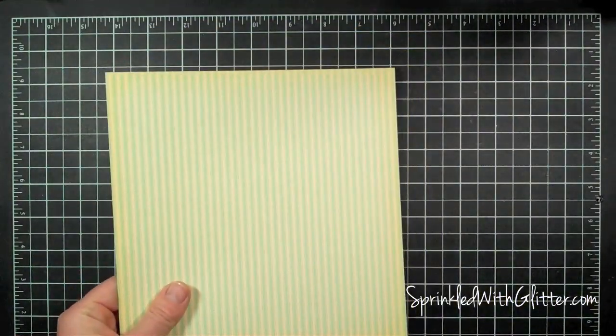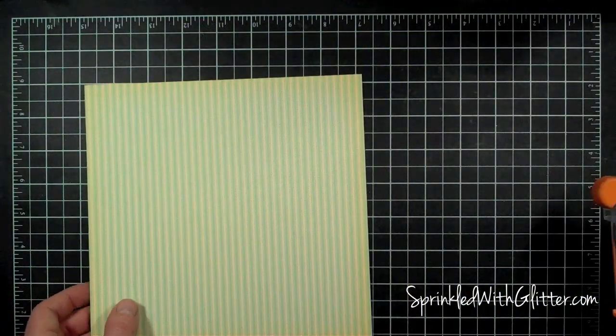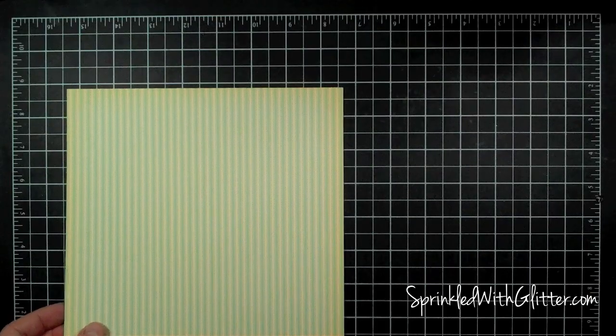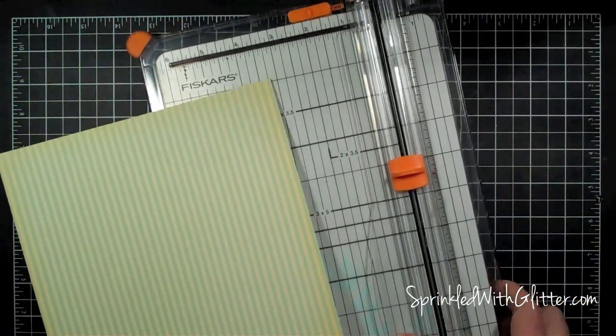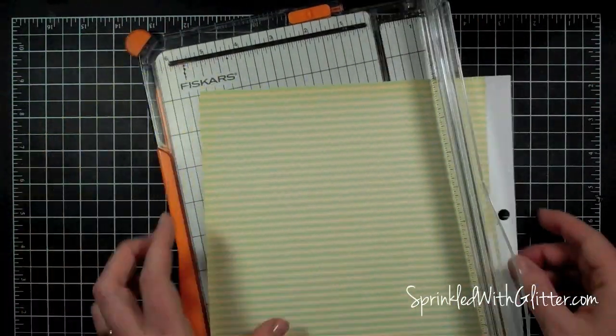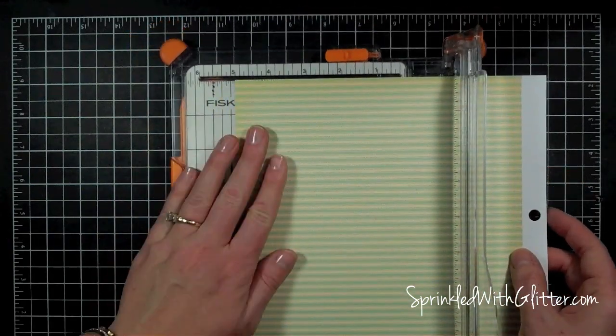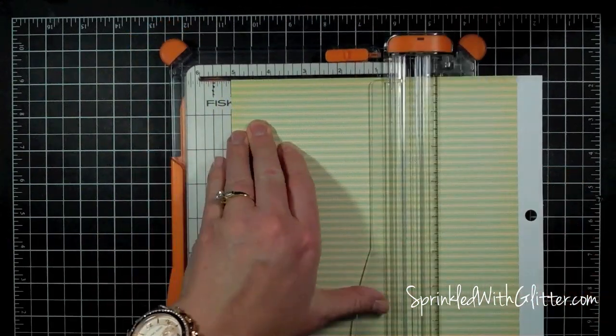I'm going to bring in some paper. This is from the Five and Dime Collection from October Afternoon and it's not necessarily a Christmas paper, but I'm going to be making a Christmas project with it. So I'm going to cut my paper down to five by five.